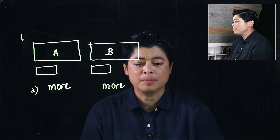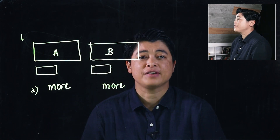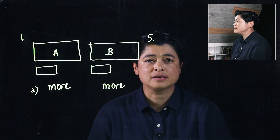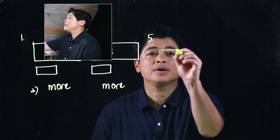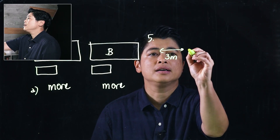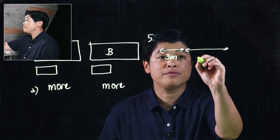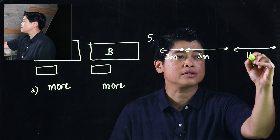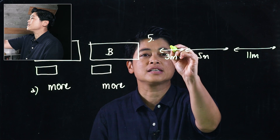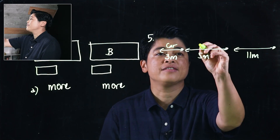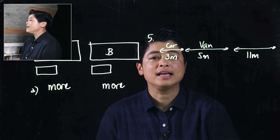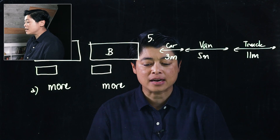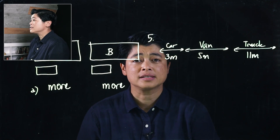Another problem we will look at is problem number 5. They give you three drawings of three vehicles: the first is a 3-meter vehicle, the next is a 5-meter vehicle, and the last is an 11-meter vehicle. The first vehicle is a car, the next is a van, and the last is a truck.